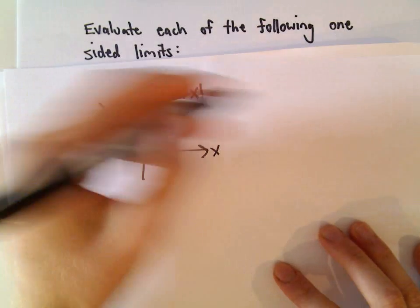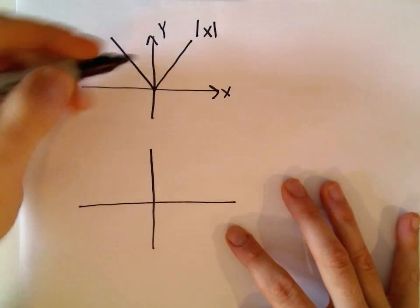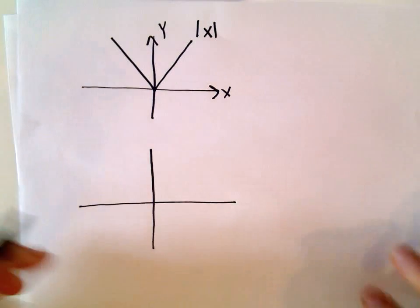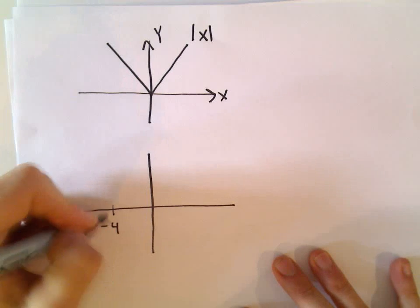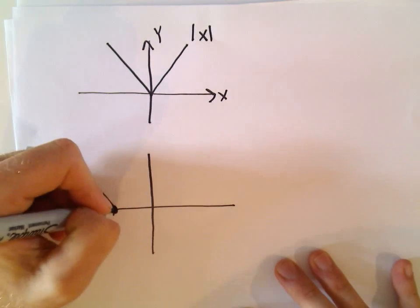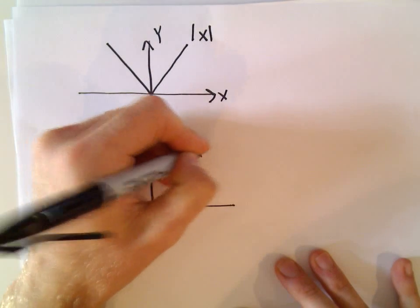If we replace the x with x plus 4, remember that shifts the graph. You can always start plotting points if you're not sure. It turns out it's going to shift it 4 units to the left. So there's the absolute value of x plus 4.